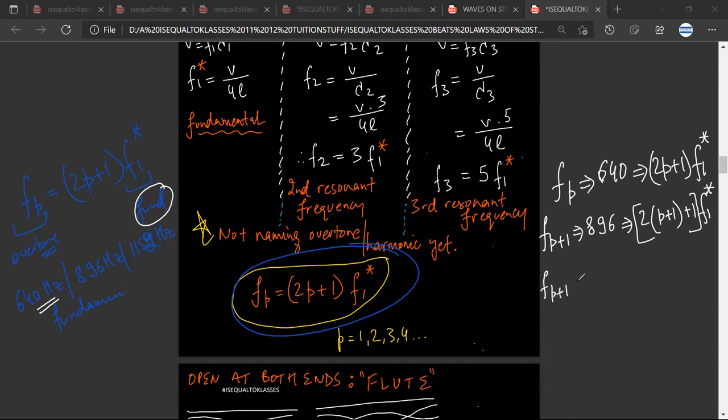f_(p+1) is equal to 896, which is equal to (2p+2+1), so (2p+3) into f1 star. Yes, understood.